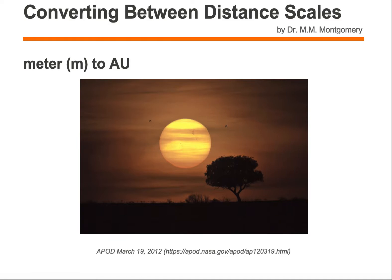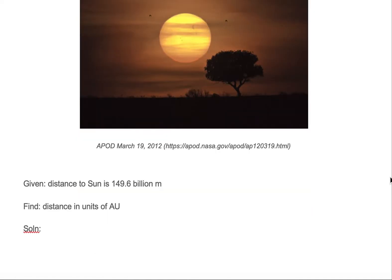Here we're looking at a picture or an image of the sun as taken from Earth. It was posted on Astronomy Picture of the Day, March 19, 2012. We want to find the distance to the sun from the Earth in units of astronomical units.